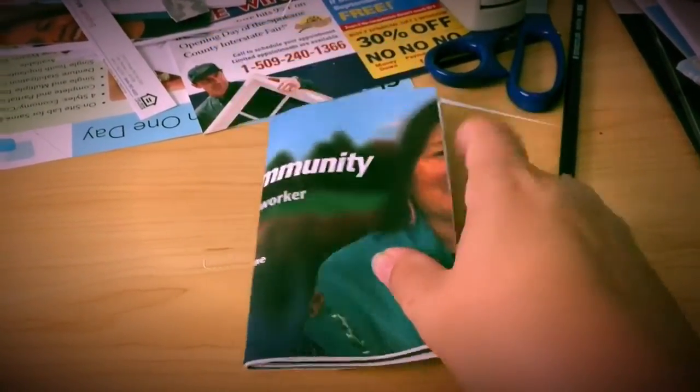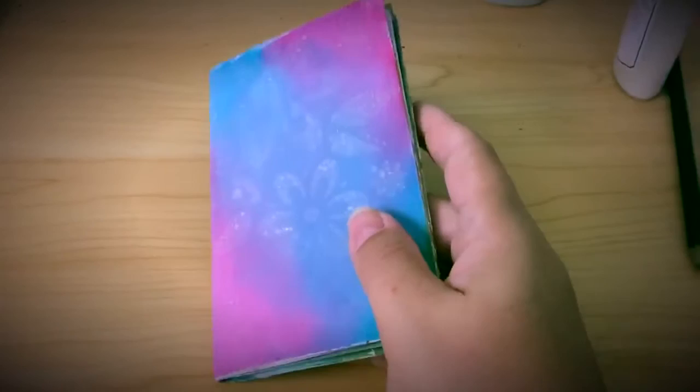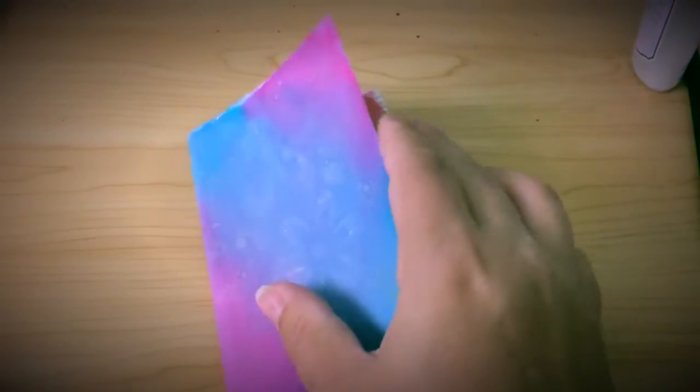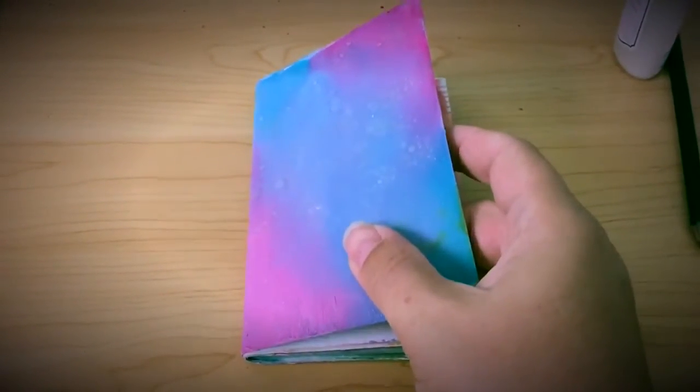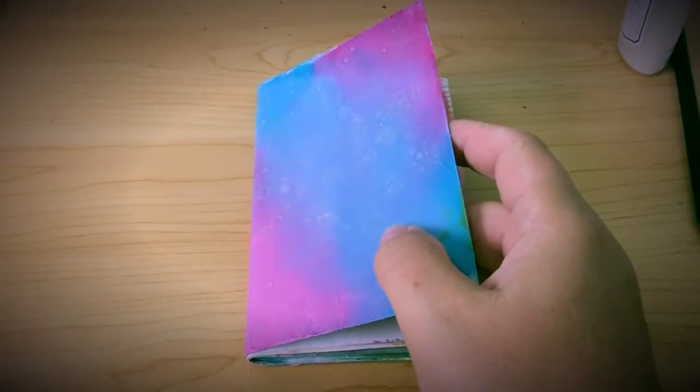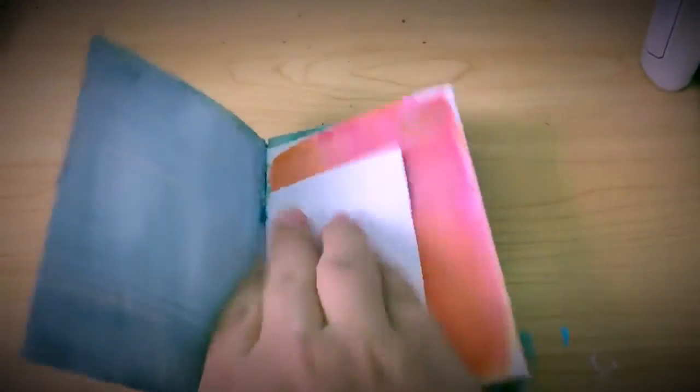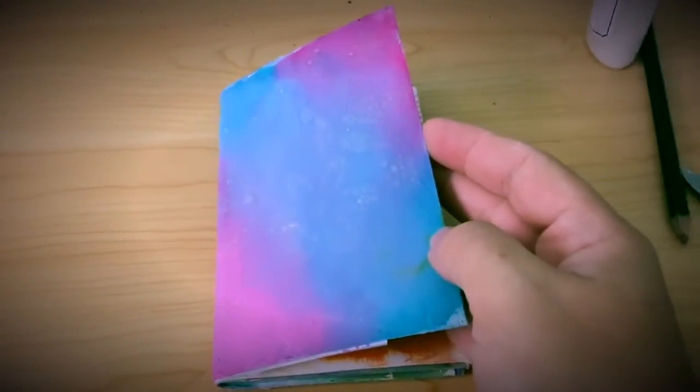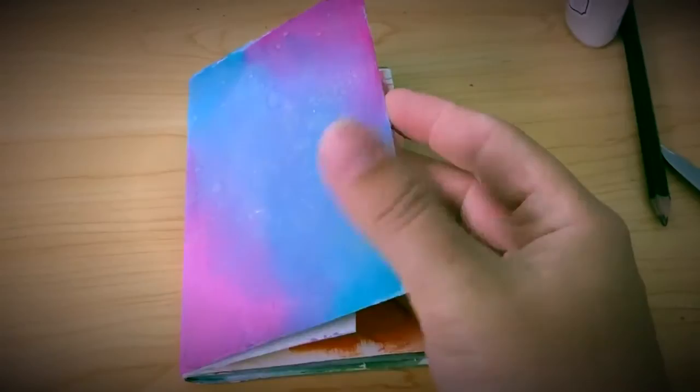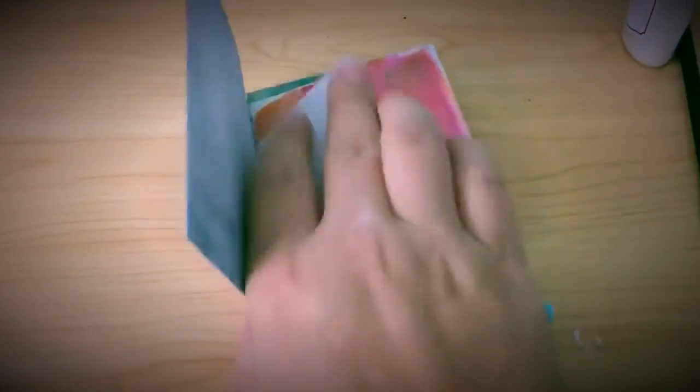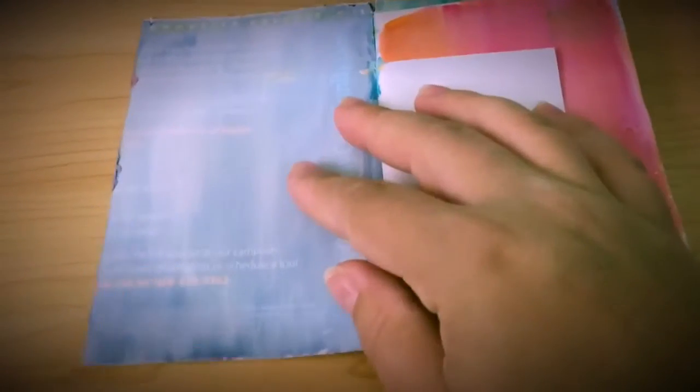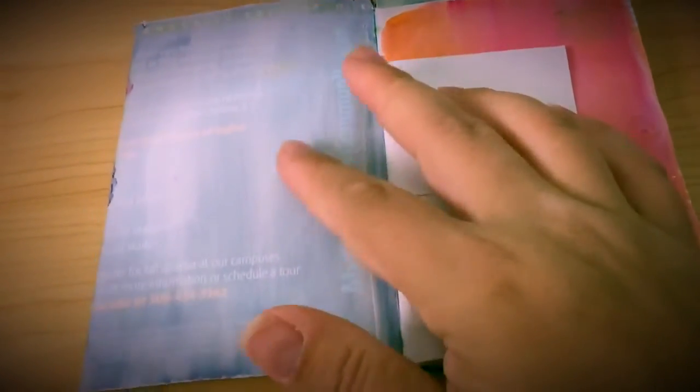That's what it looks like right now. Okay, so this is after I have put gesso and the distress stains on each page. I can't do a tutorial on this right now because I don't have a tripod and I can't do this one-handed. So anyway, I just wanted to show you what I did. This is with one coat of gesso.